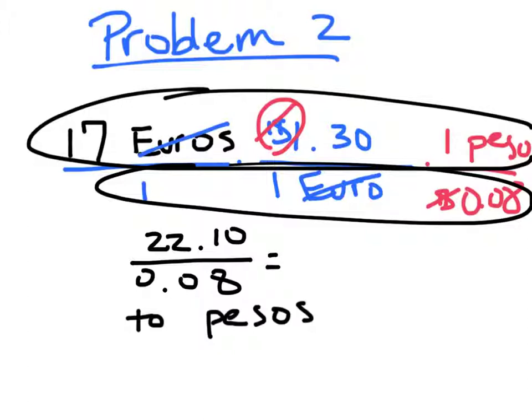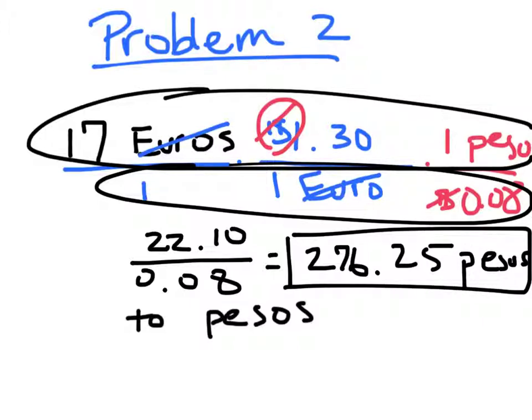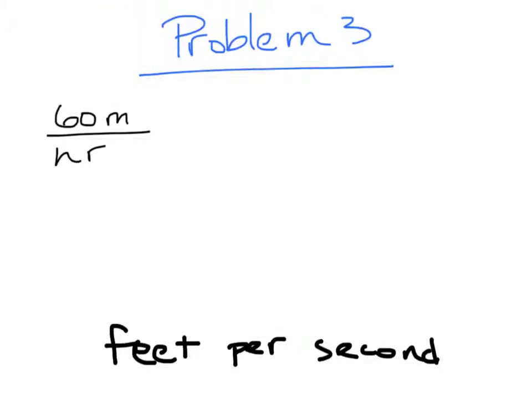That's divided by 0.08. Now to get a better decimal, I'm going to divide those together. So 22.10 divided by 0.08 is 276.25. And that's how many pesos there are. Very similar with simplifying fractions. Make sure you put it over 1 to begin with, so you have a fraction to work with, and then you can cross-cancel.